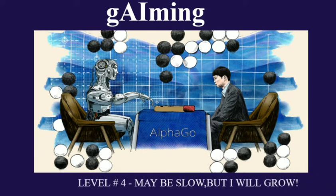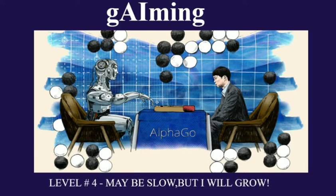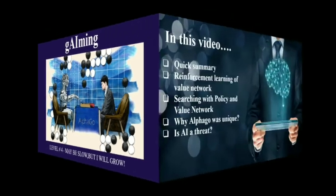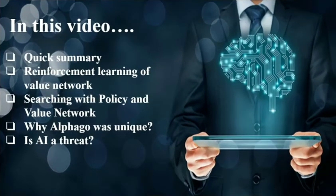So without further ado, let's get started with level 4. In this particular video you will be served with: a quick summary of the 3rd video, Reinforcement Learning, Value Network, searching with Policy and Value Network, why AlphaGo was unique, and finally we will discuss whether Artificial Intelligence is actually a threat.